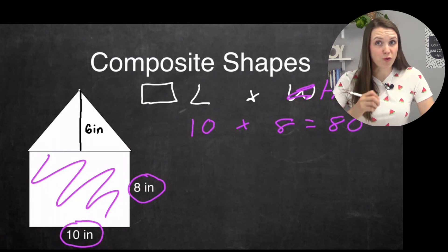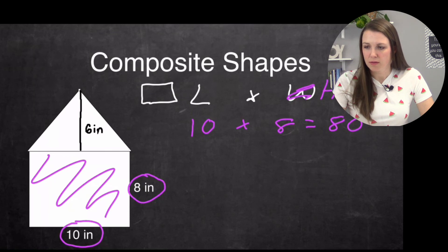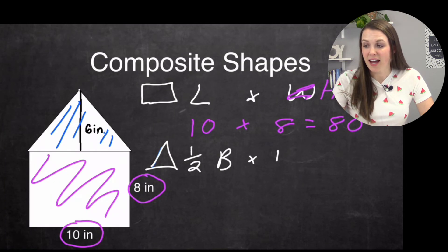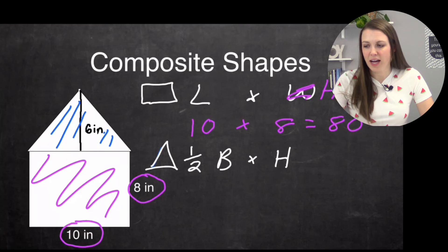Now to find the area of a triangle, it's actually one step more. So we're going to make the triangle blue. And so what I'm going to have to do to find the area of the triangle, the area of a triangle is one half base times height, so it's slightly different.